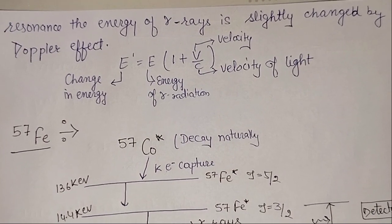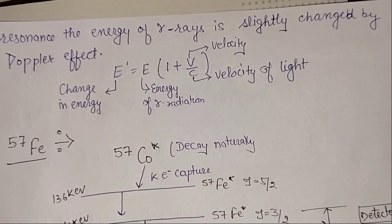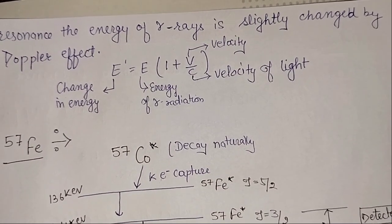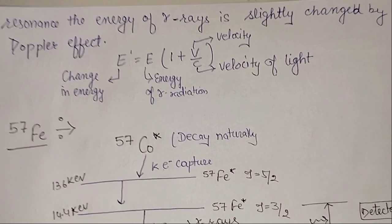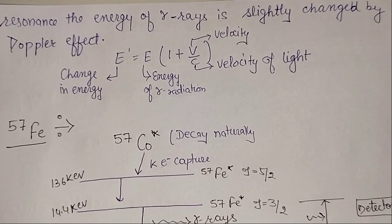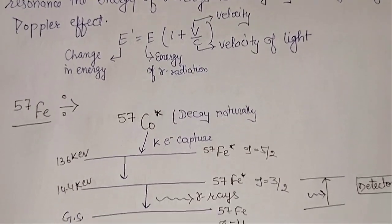This is known as the Doppler effect. The change in energy is represented by E' = E₀(1 + v/c), where v is the velocity of vibration. The vibration ensures that the energy of the nuclear resonance matches the energy of gamma rays.